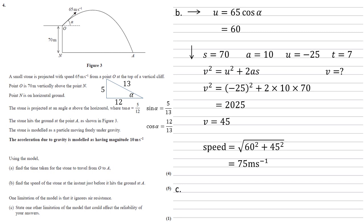For part C, we need to state one limitation of the model that could affect the reliability of your answers. There are quite a few options for this. We could say something like the size of the stone, potential spin on the stone, the effects of wind, quite a few things. But what I'm going to take is that in this question, we've been given gravity approximated to 10 instead of the usual 9.8.